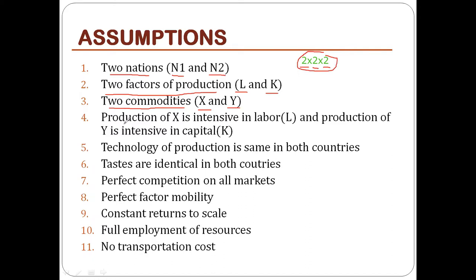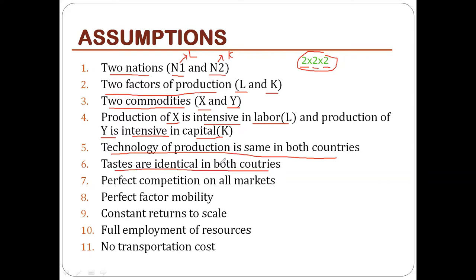Nation one is labor-abundant and nation two is capital-abundant. Commodity X is labor-intensive, requiring more labor to produce, and commodity Y is capital-intensive. The technology of production is the same in both countries, meaning the production possibility frontier is identical for both. Tastes are also identical in both countries, so the indifference curves are the same — these two assumptions are for simplification.